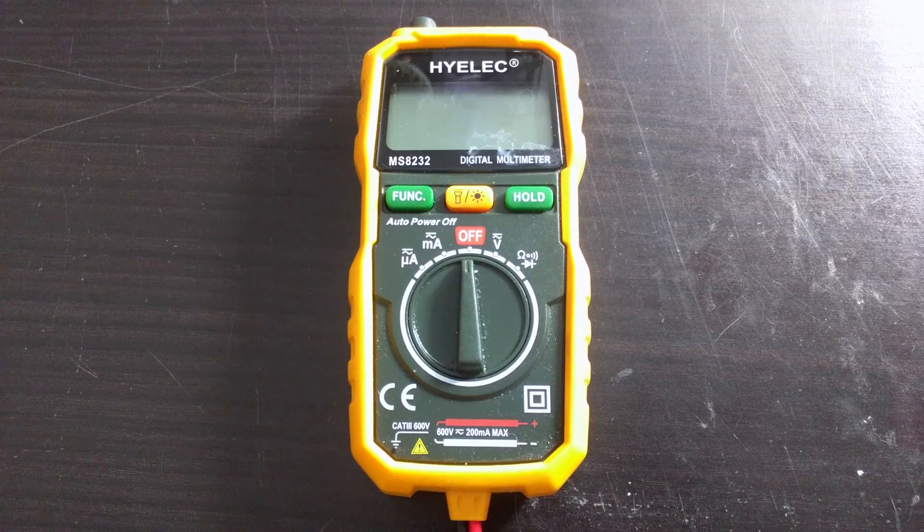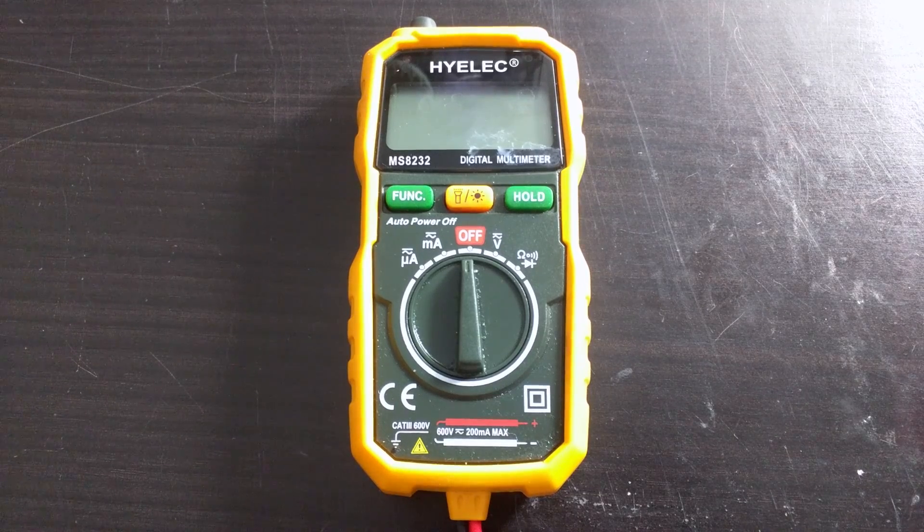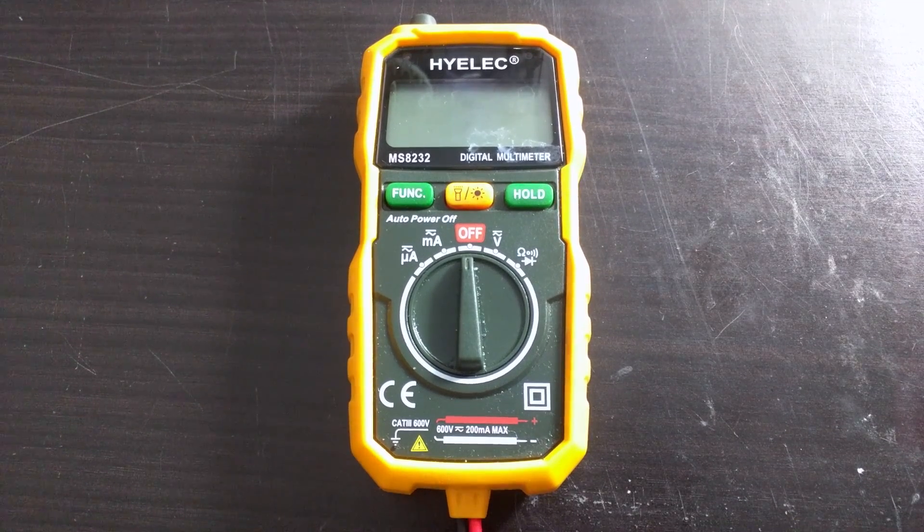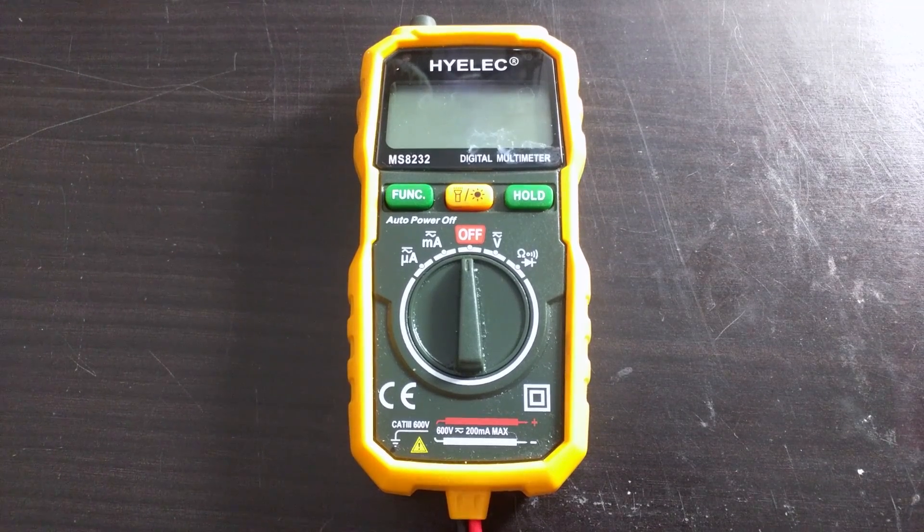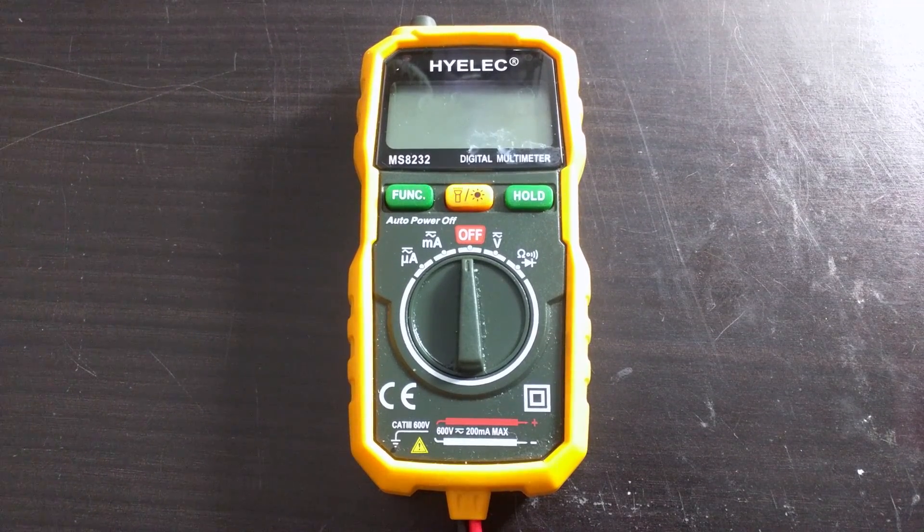Hello and welcome to the 14th episode of Simply Electronics Basics. In today's video, we're going to have a look at one aspect of multimeters: measuring resistance and continuity.